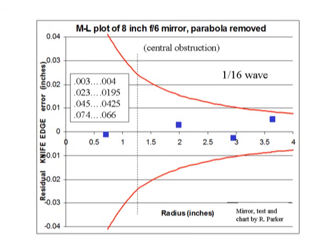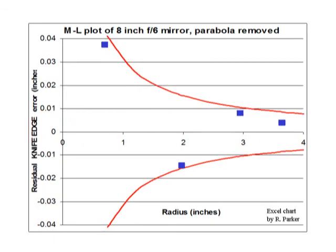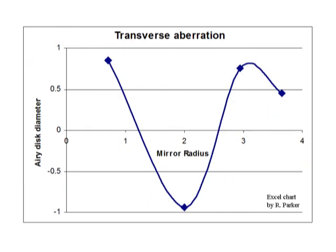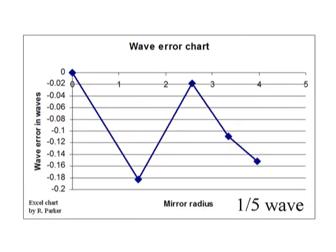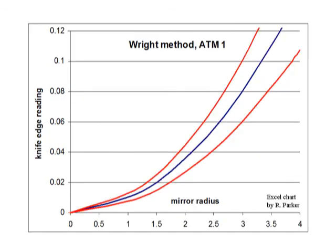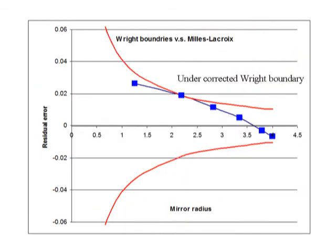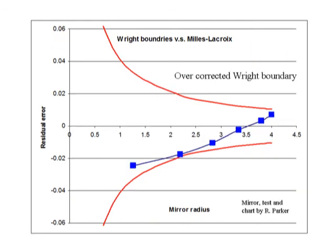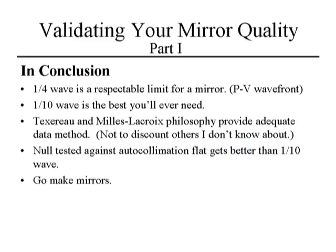To show how good the Mills-LaCroix boundaries are: if you scatter points widely within them — as Follett demonstrated in his article — you'll find the transverse aberration stays inside the Airy disk and the wavefront comes to about 1/5-wave. As a final note, I plotted the undercorrected and overcorrected boundaries from the classical method against the Mills-LaCroix boundaries and both fit within the Mills-LaCroix curves — confirming those classical boundaries are good, even if not fully backed by science.